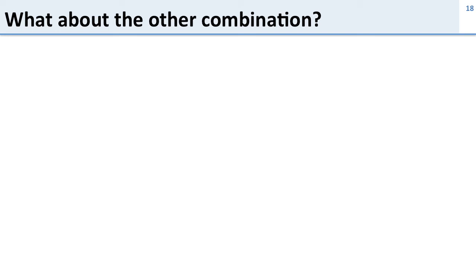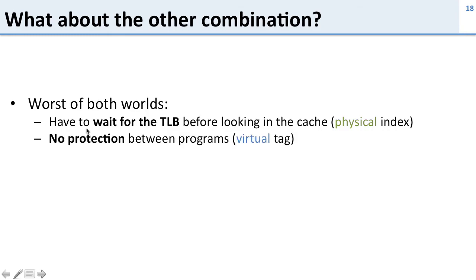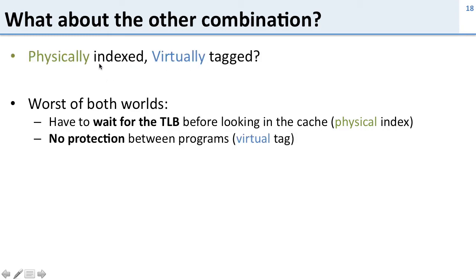What about the fourth combination — physically indexed, virtually tagged? This is a terrible idea; it's the worst of both worlds. We have to wait for the TLB before we look in the cache because it's physically indexed, and we have no protection because the tag is virtual. There's no way to know if the tags are actually matching across programs. Just don't do this one.